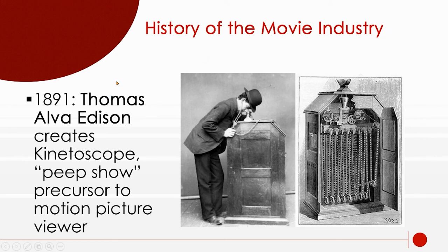Back before the turn of the century, Thomas Edison created something called the Kinetoscope — sometimes known as a 'peep show,' and yes, sometimes the content was a bit risqué. You would put money in the Kinetoscope and look at it, with film going past showing a short little movie. Only one person could look at it at a time. That was the first idea of movies.